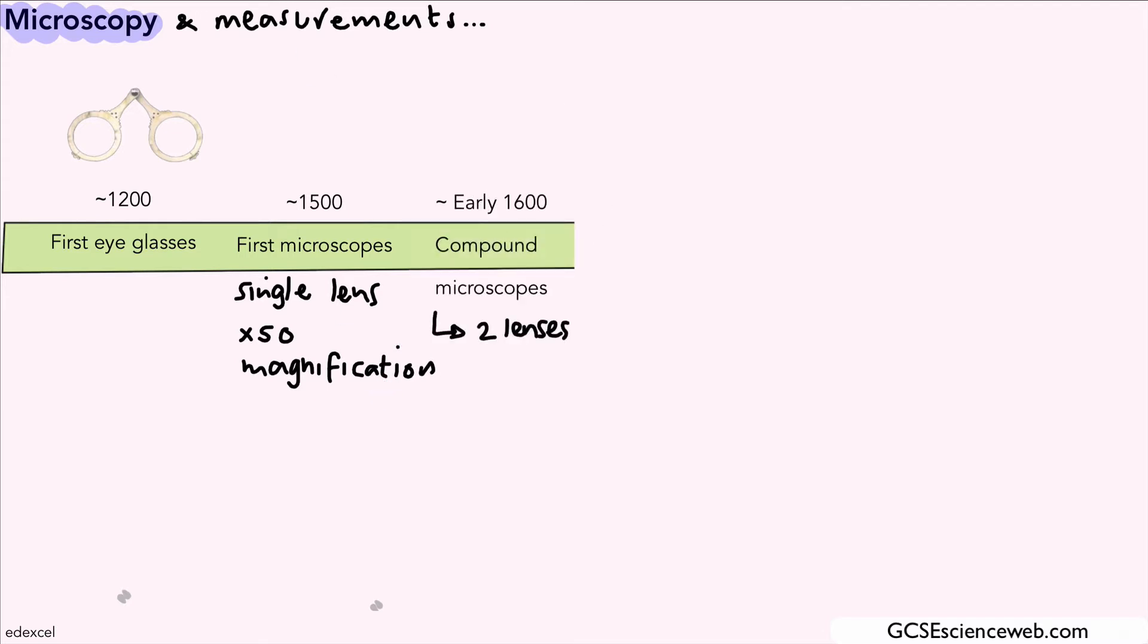Go forward by another 100 years and we see the development of what we call compound microscopes. These are microscopes that had two lenses. By the mid-1600s, we saw the first cells. In fact, the first person to see cells was somebody called Robert Hooke, and he was the person that actually coined the term 'cell' when he looked at cork under a microscope.